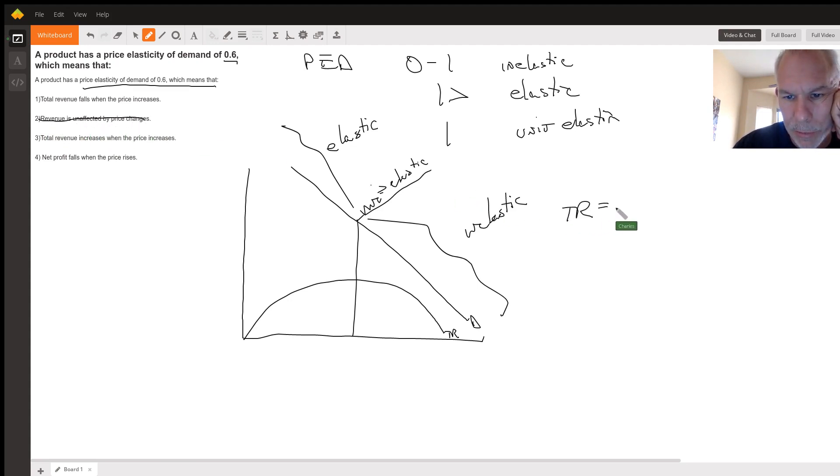Because total revenue equals price times quantity. So if price goes up, mathematically, total revenue has to go up, as long as quantity stays the same. So we know that two can't be the right answer.